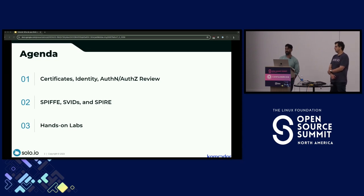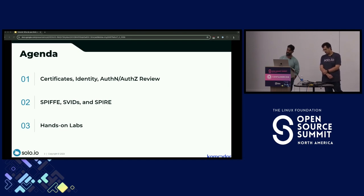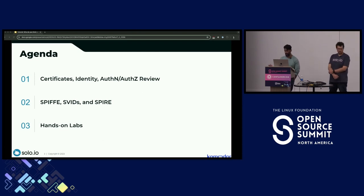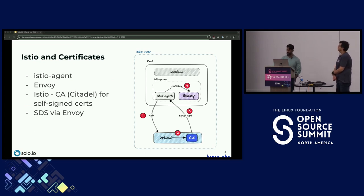We'll then dig into a hands-on lab which will give us insight into how we stand up TLS or mTLS, leverage certificates, and assign certificates to workloads in Kubernetes. We'll use tools like the Istio CSR alongside cert-manager, as well as the Istio service mesh, to provide the foundation for our workloads. Let's dig right in — there are three components generally involved in the delivery of certificates to workloads.